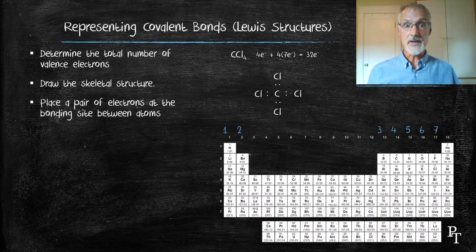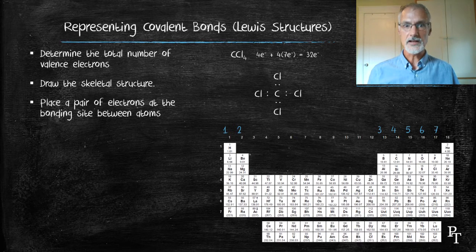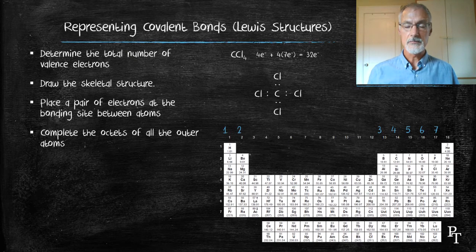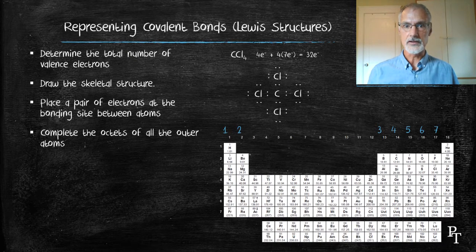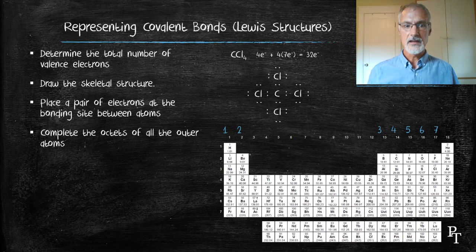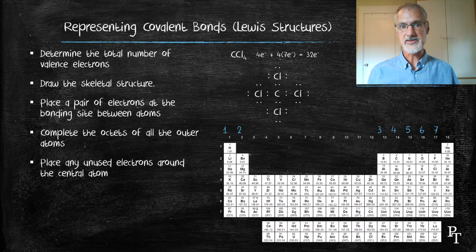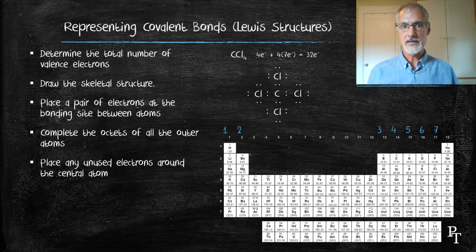Now I take the remaining electrons and complete the octets of the atoms that are on the periphery or on the outside, but I can't exceed the 32 electron total. At this point, after placing all of the electrons, I've reached a total of 32. If I had any left over, I would give those to the central atom, but in this case, I've already used up the full complement of electrons.